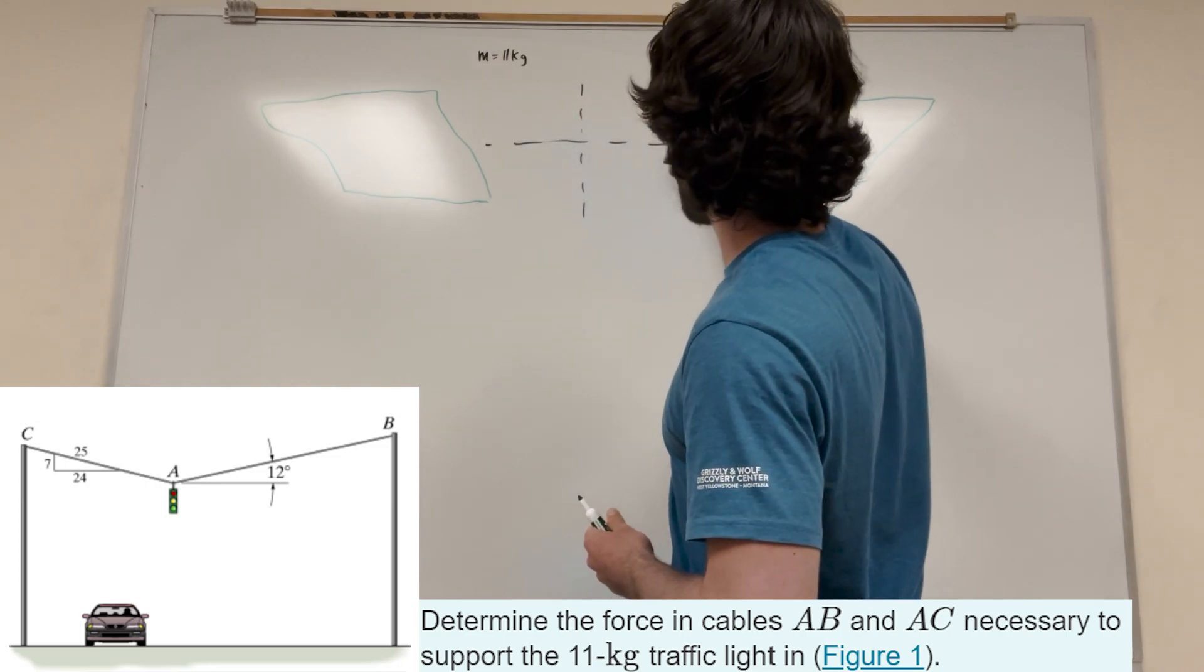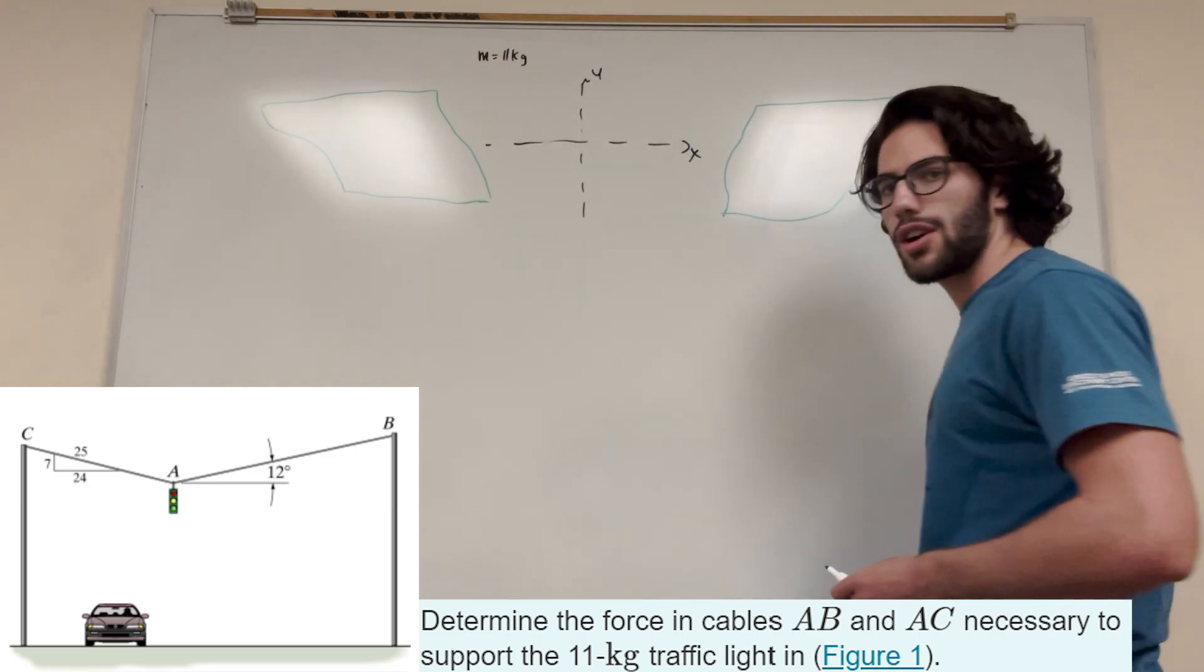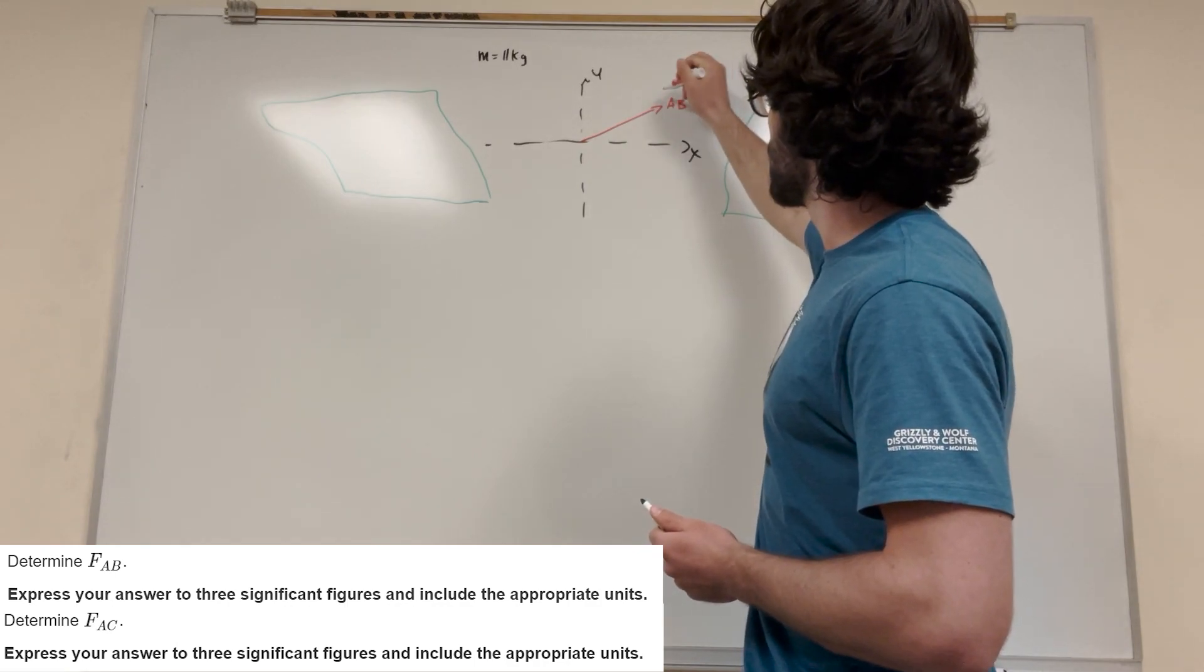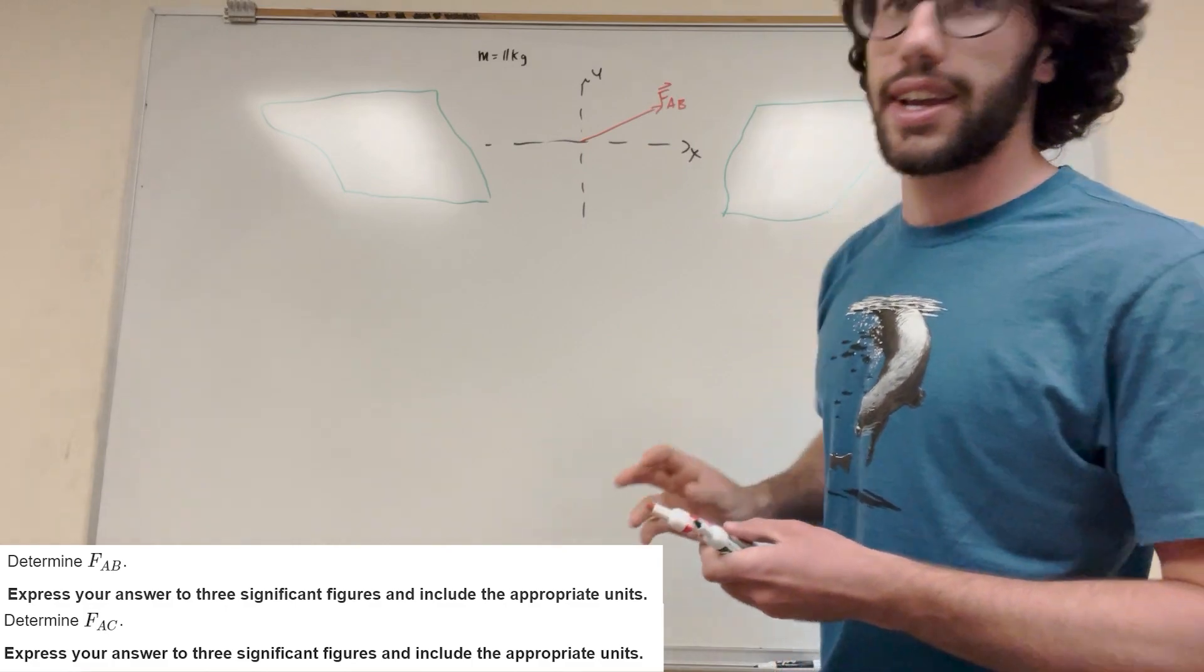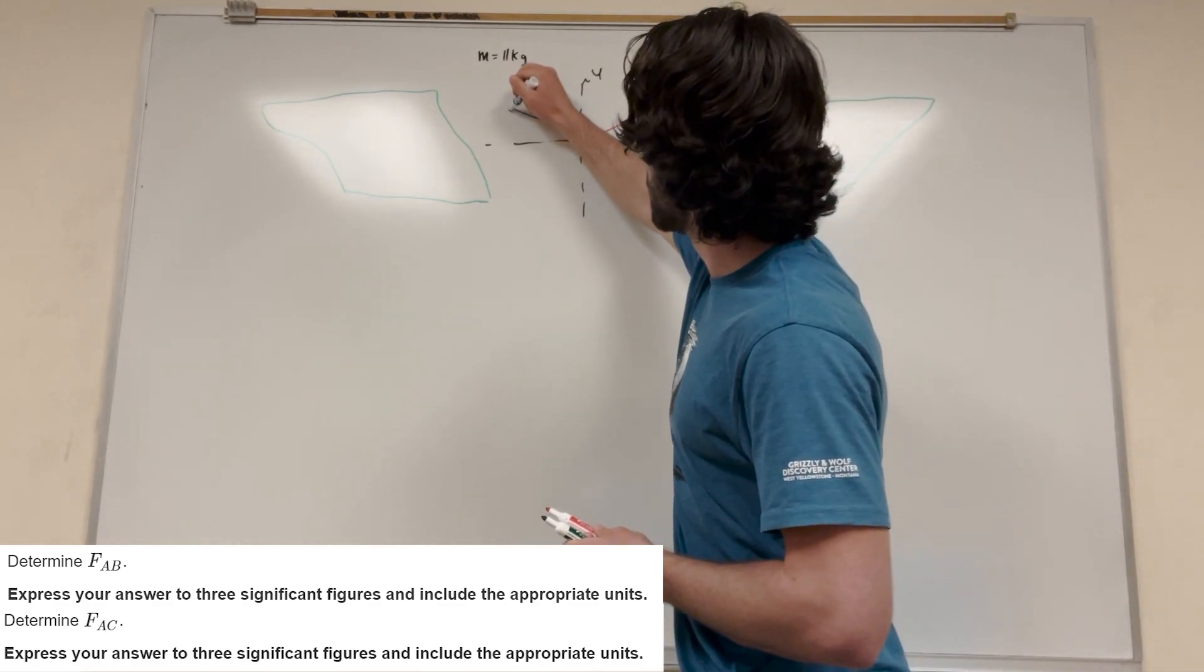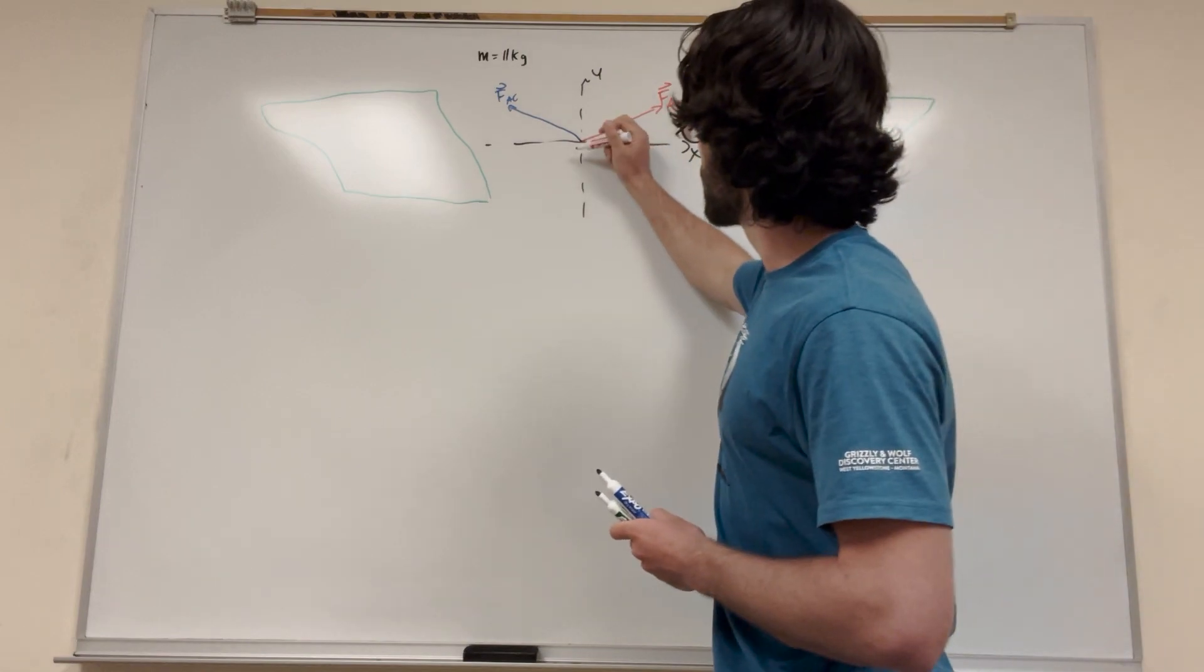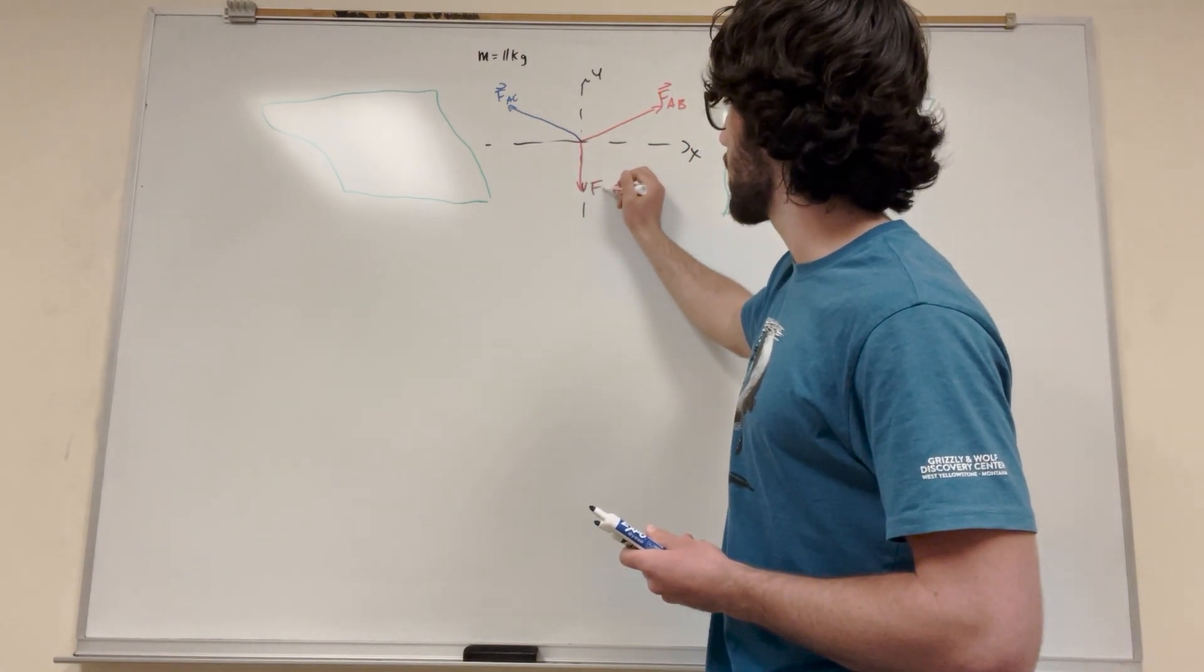So here's a force-body diagram. This is X, this is Y. And let's draw our forces. We have AB, it's a tension force pulling in this direction. The original label is force AB. We also have force AC that pulls the other direction. And we also have the force of gravity pulling down. Because this traffic light has mass on it, so of course force of gravity is going to be there.